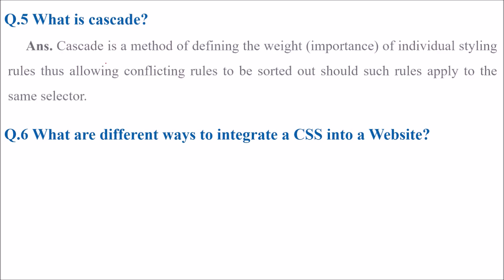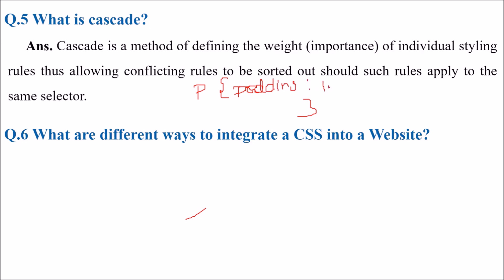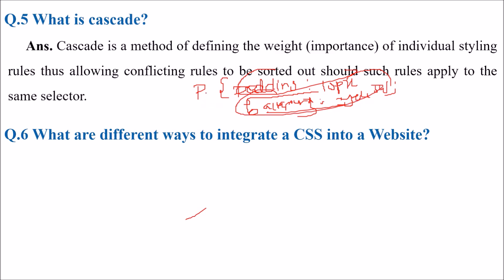What is cascade? Cascade is a method of defining the weight or the importance of individual styling rules, allowing conflicting rules to be sorted out — that is, determining which style should be applied first when the same selector has conflicting rules. For example, if you have a paragraph with padding: 10px and background: yellow applied in sequence, they are cascaded — first one is applied, then the next. This is a method of defining the weight of individual styling rules so there will be no conflict.